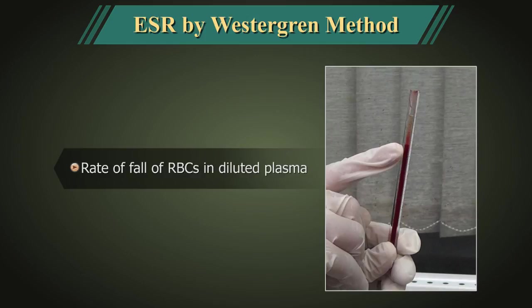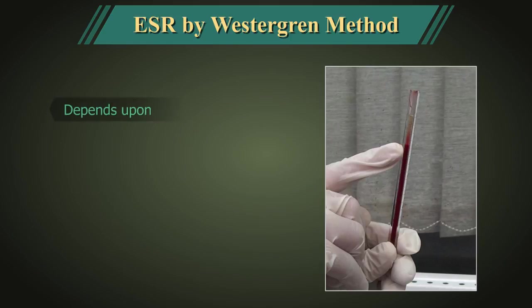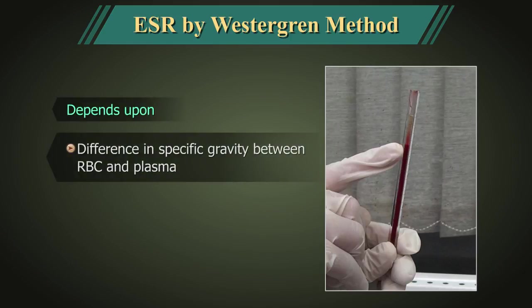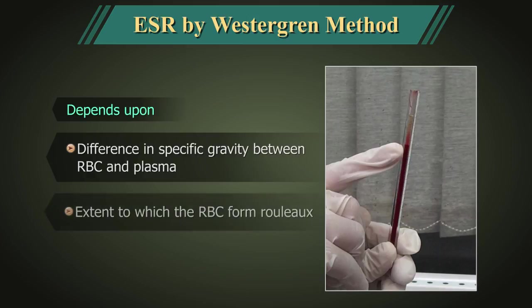ESR is the rate of fall of RBCs in diluted plasma and is influenced by a number of inter-reacting factors. Basically, it depends upon the difference in specific gravity between red cells and plasma, but the actual rate of fall is influenced very greatly by the extent to which the red cells form rouleaux, which sediment more rapidly than single cells.